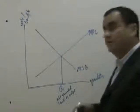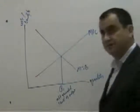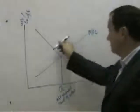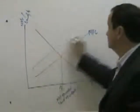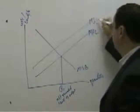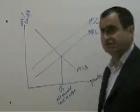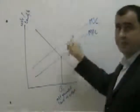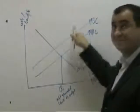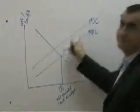But this is market failing because we should also consider the external costs, which we can add to the private costs, and this gives us a parallel marginal social cost curve, which is higher by a vertical distance equal to the external costs, higher than the private costs.